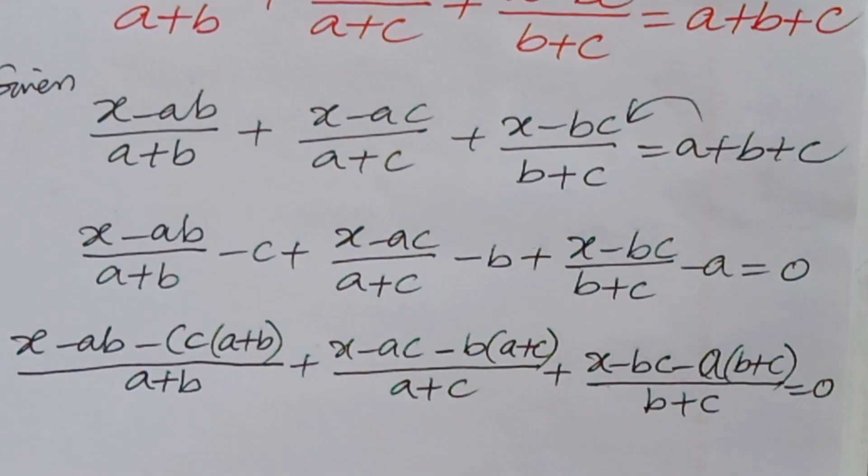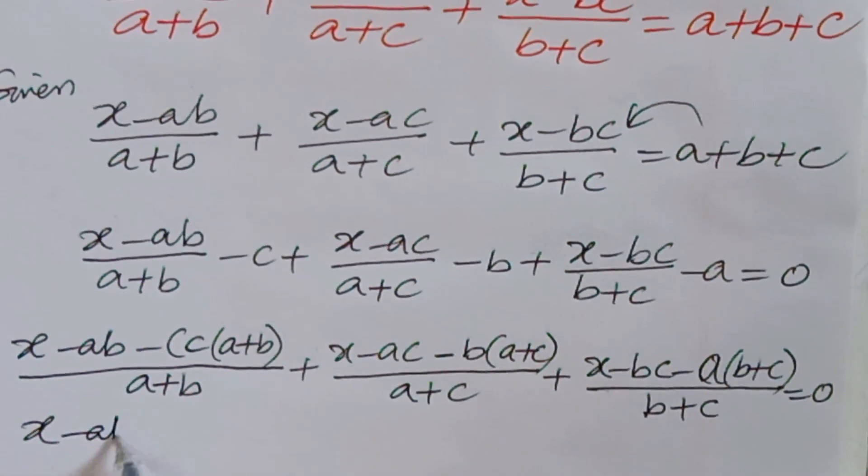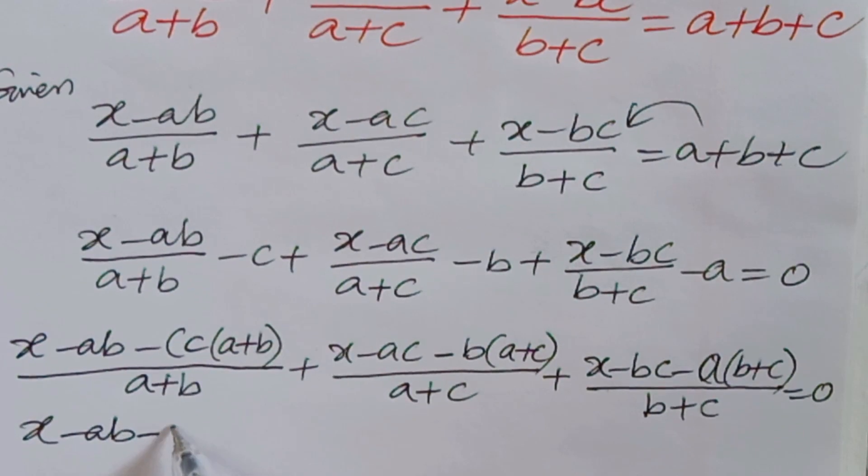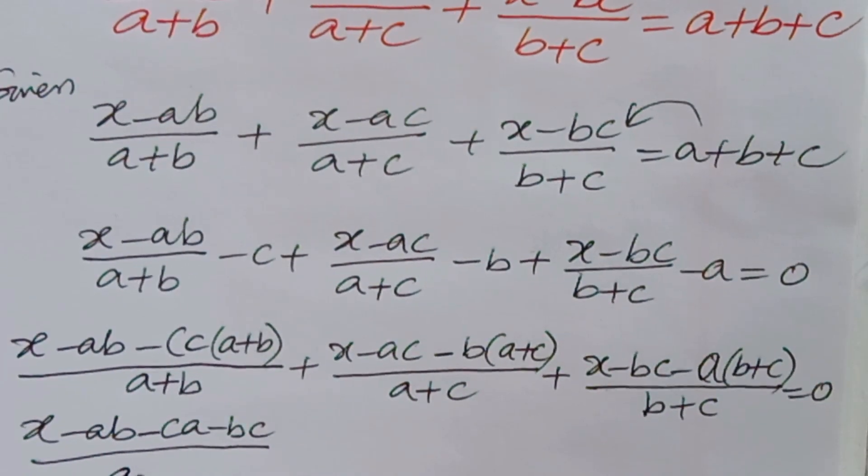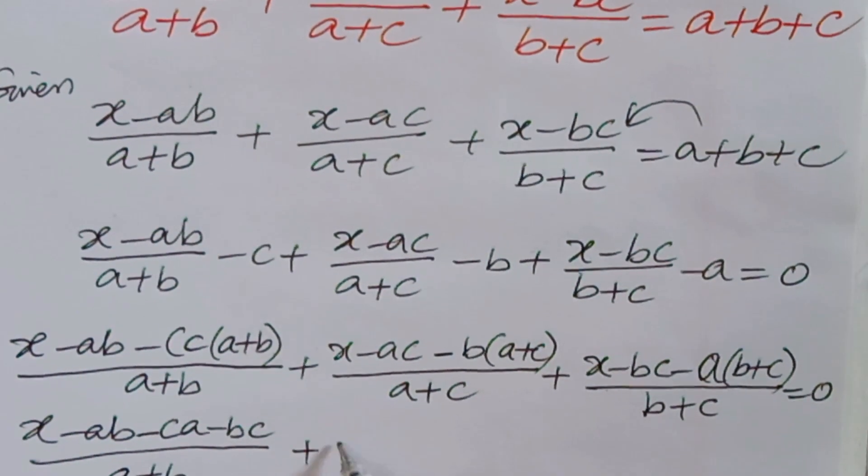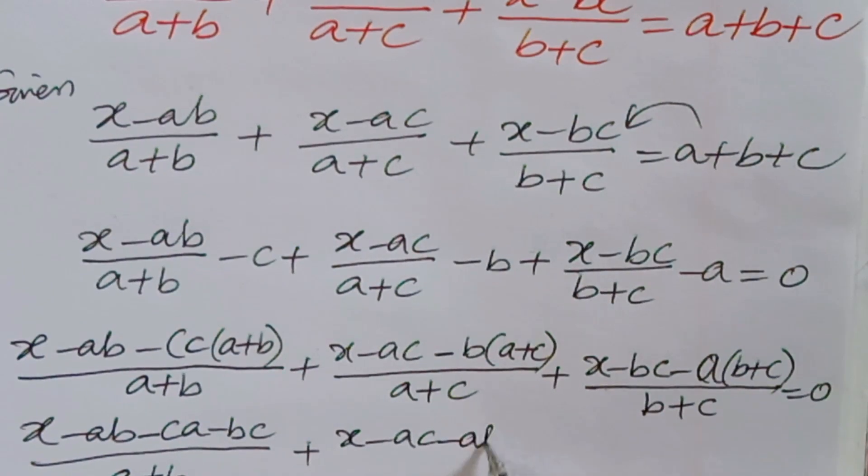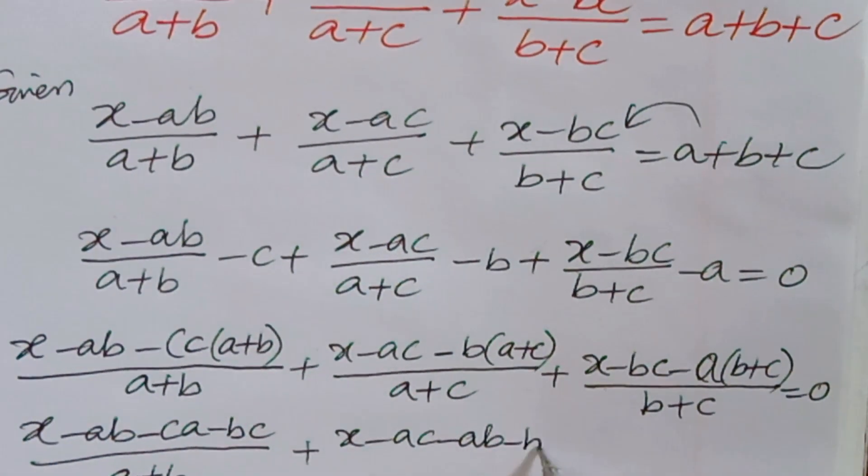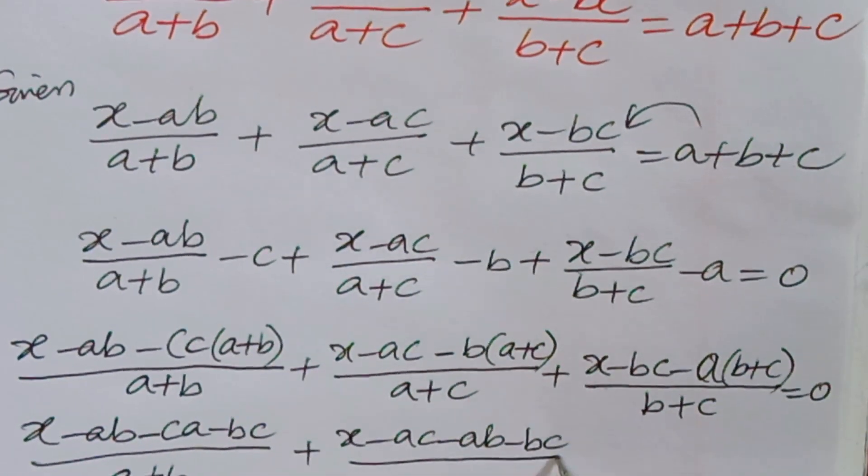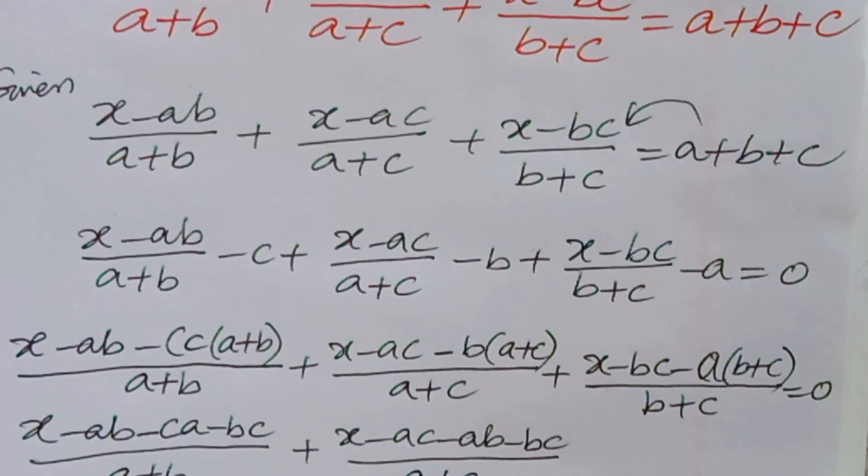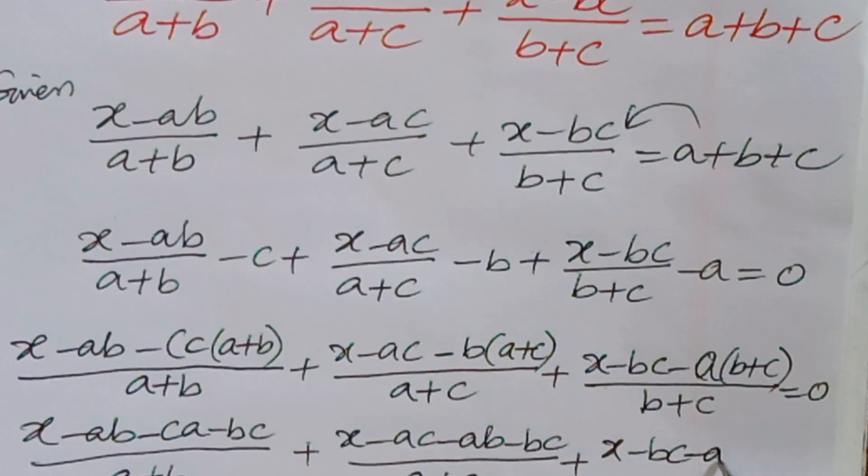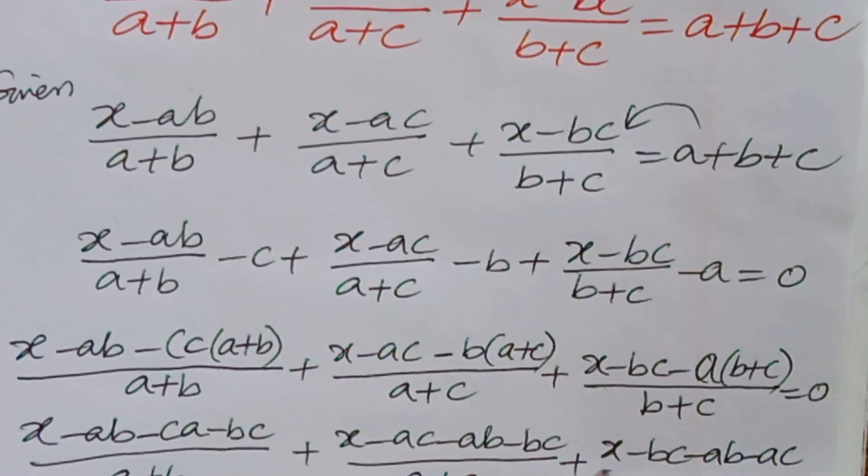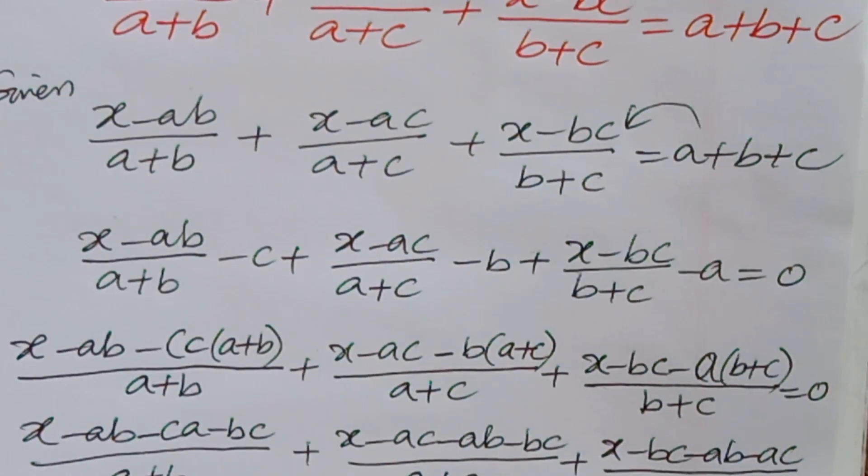Now if you open the brackets, what you will get here: (x - ab - ca - bc)/(a + b) plus (x - ac - ab - bc)/(a + c) plus (x - bc - ab - ac)/(b + c).